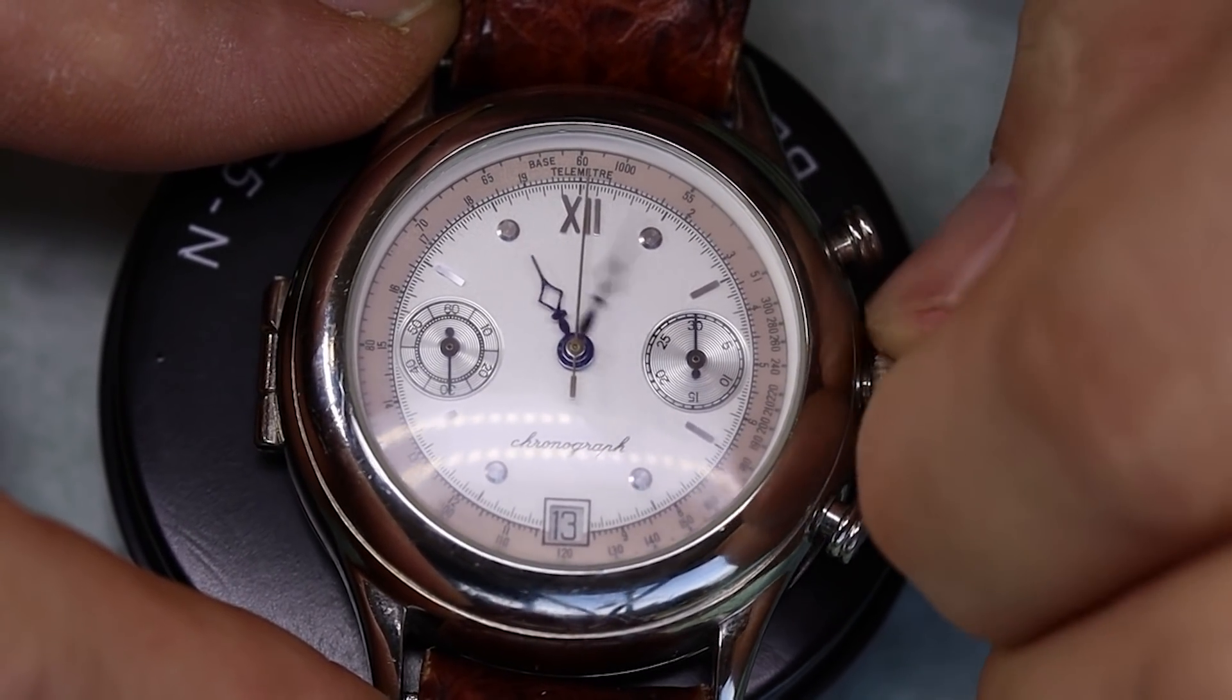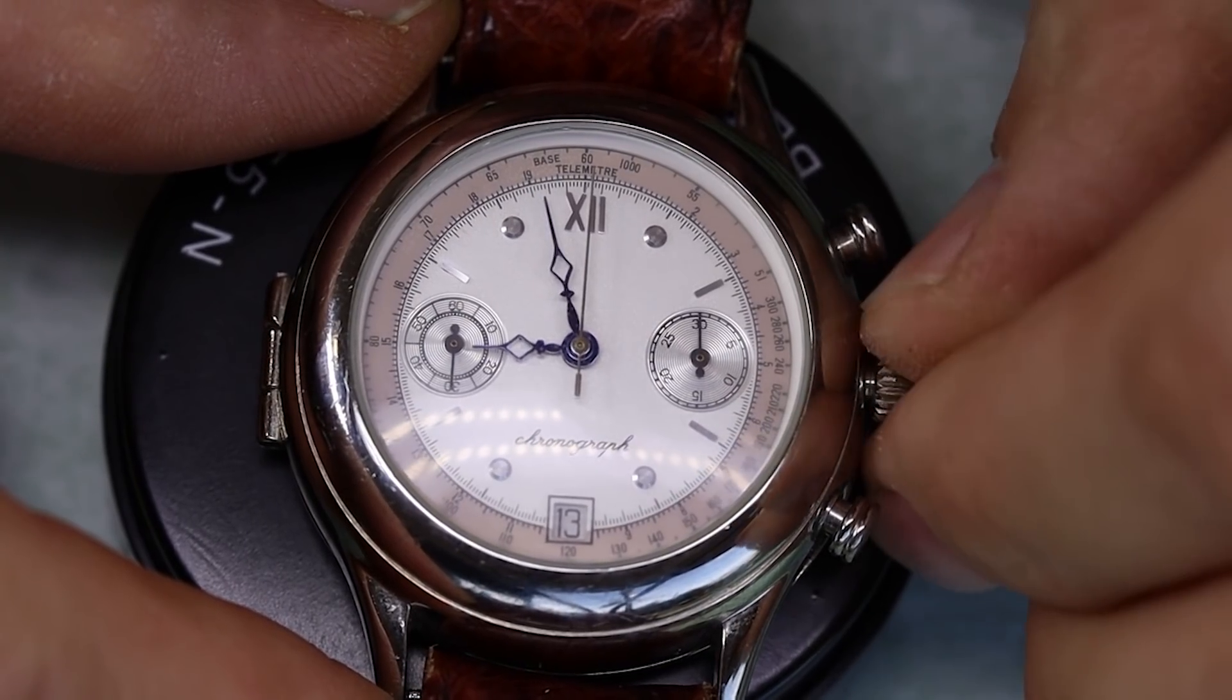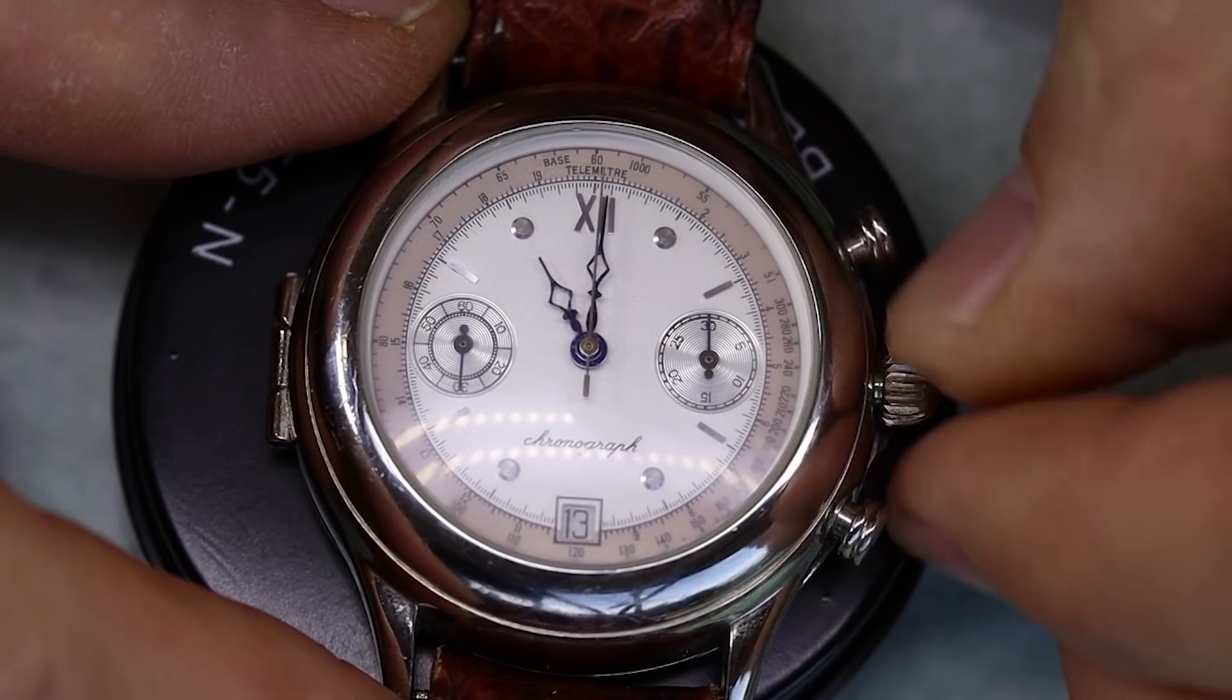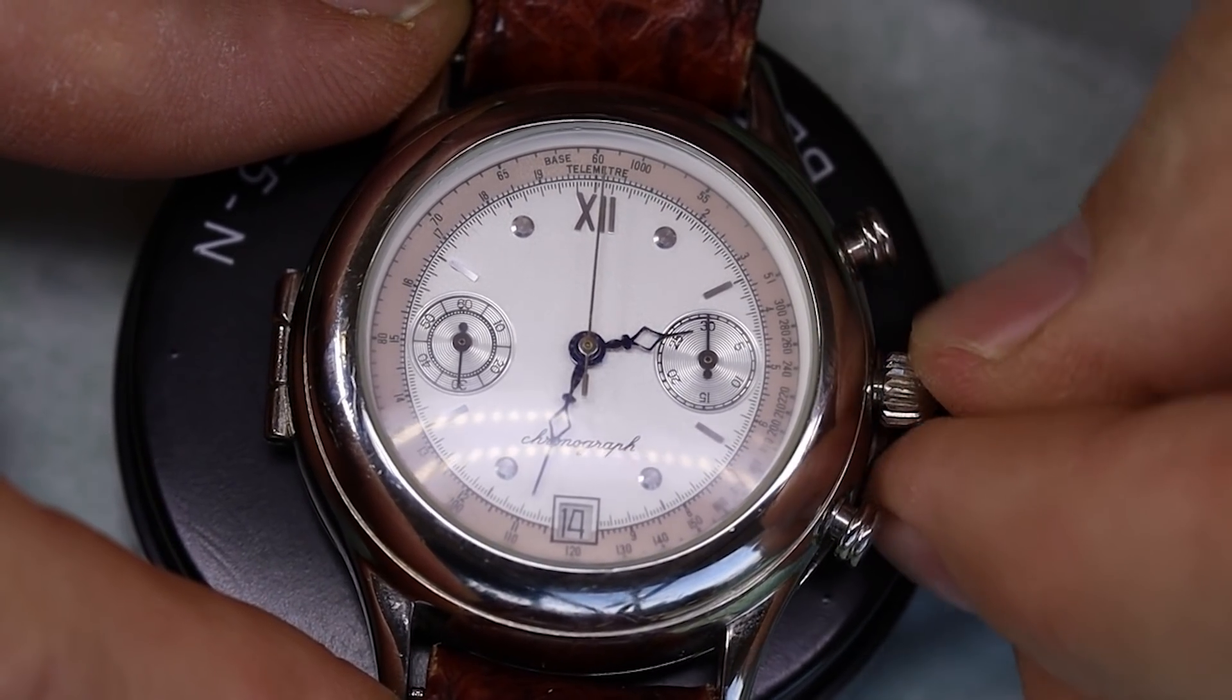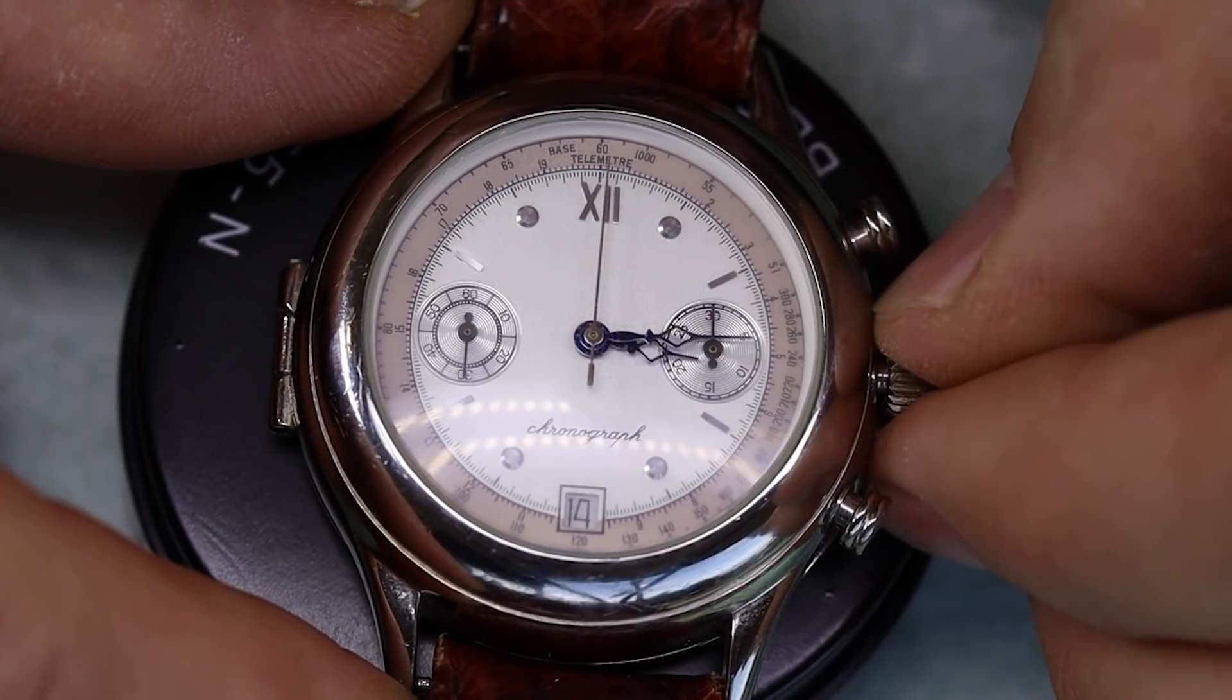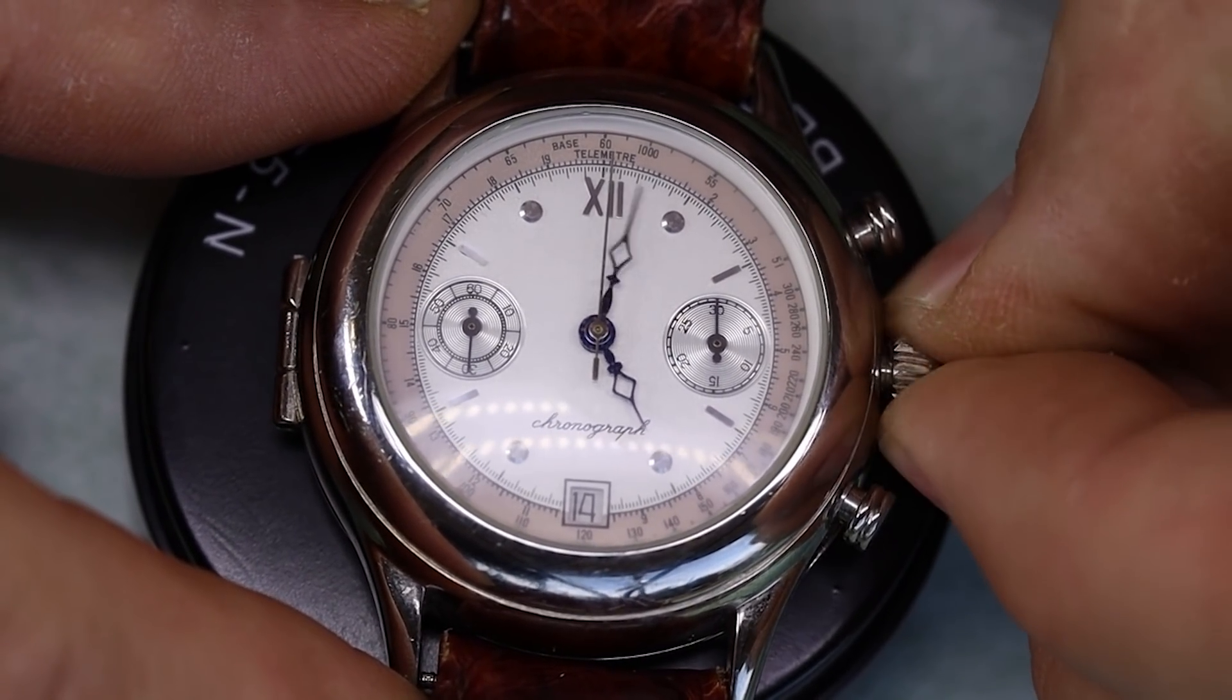We have a Soviet watch on the bench today, a Poljot 3133. It's a pretty well-known movement, especially to those who like Soviet or Russian watches. But the watch is not running, it's not even walking, and it's barely crawling.